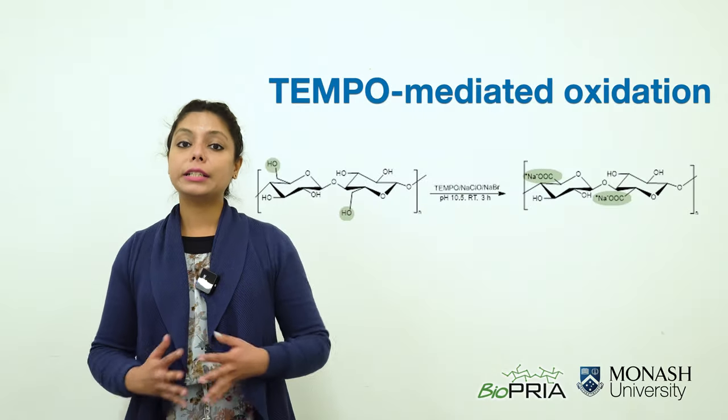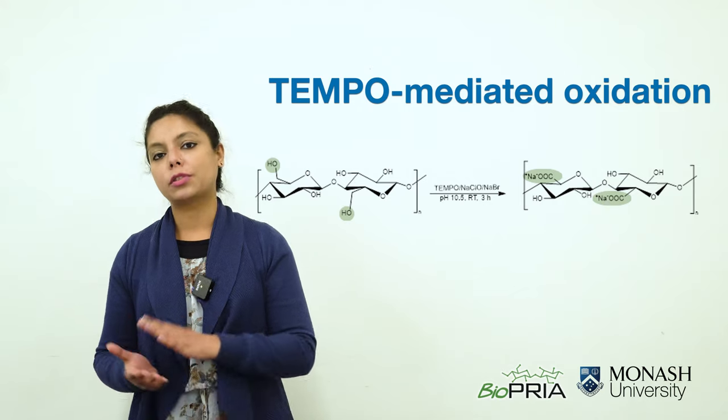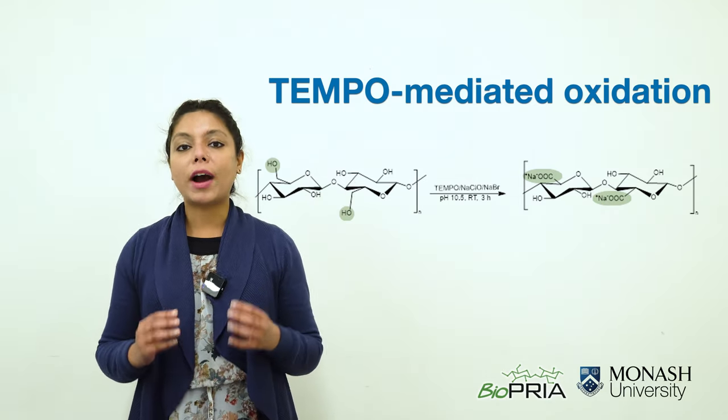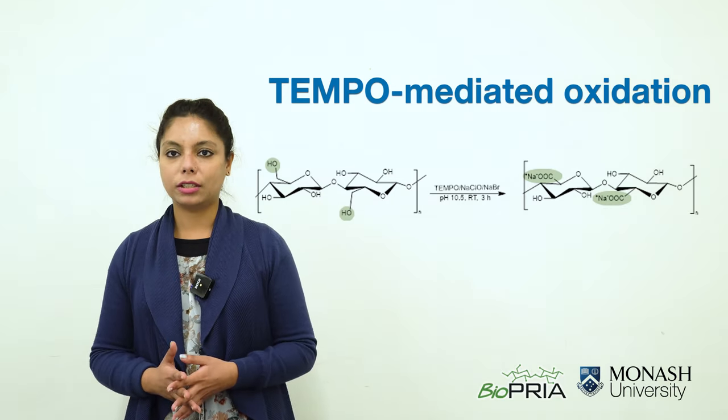TEMPO mediated oxidation selectively oxidizes the primary hydroxyl group to carboxylic group. Here TEMPO acts as catalyst while sodium bromide and sodium hypochlorite act as oxidizing agent.